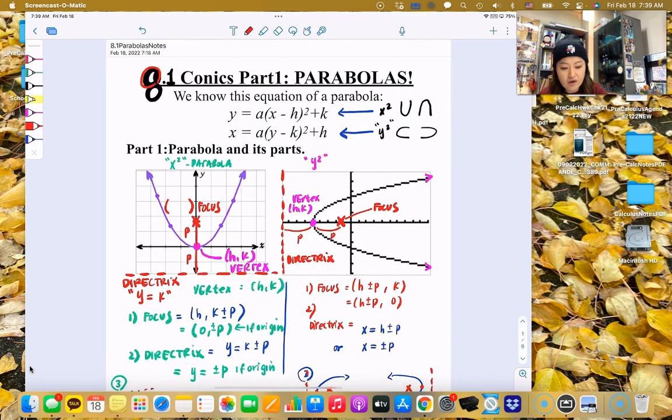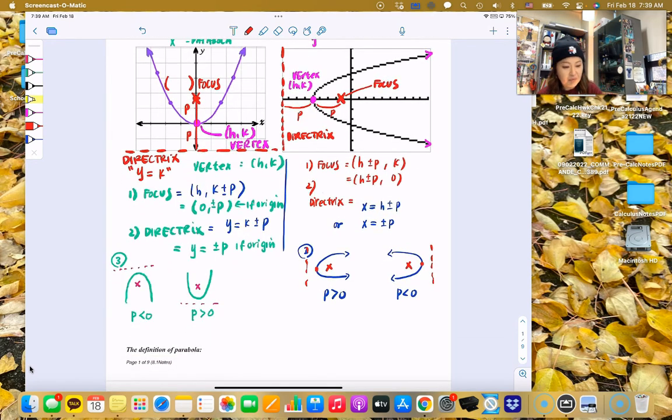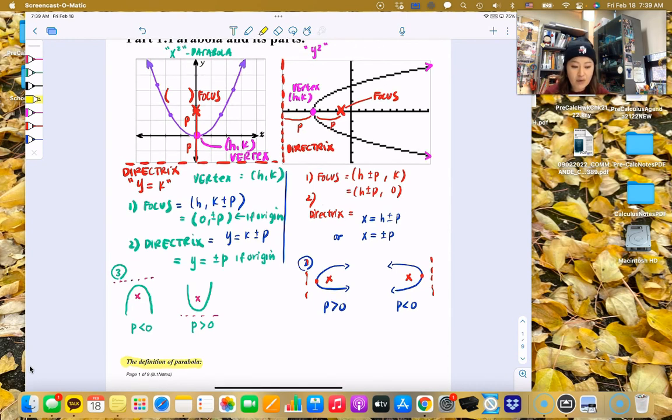All right. Well, that was the anatomy of a parabola. So let's actually move on to part two in the next video. Again, what is the definition of a parabola? You got to keep thinking about that. It's the locus of points equidistant from a fixed point and a fixed line. All right. See you next video.